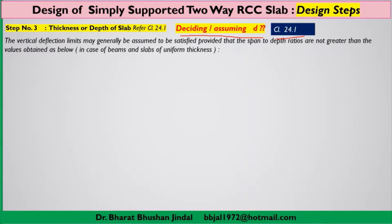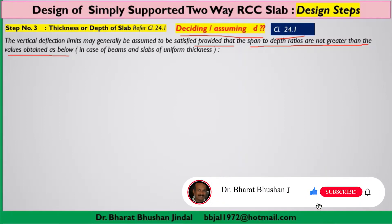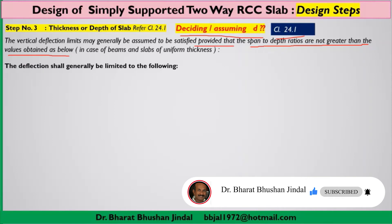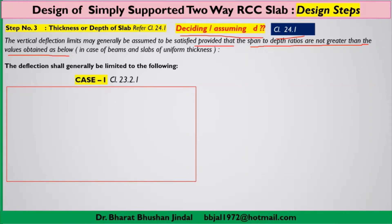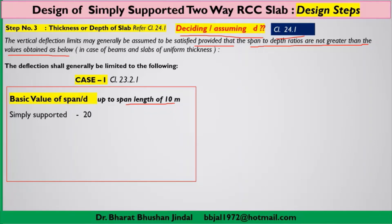Vertical deflection limits may generally be assumed to be satisfied provided that the span-to-depth ratios are not greater than the specified values, applicable to beams or slabs of uniform thickness. As per Clause 23.2.1, when the shorter span length is up to 10 meters, the basic value of the span-to-depth ratio can be taken as L/D = 20, the same as used for beams.